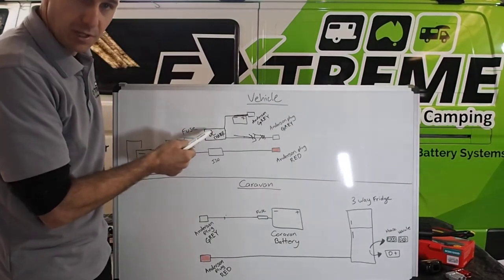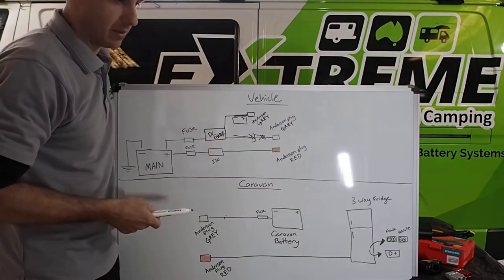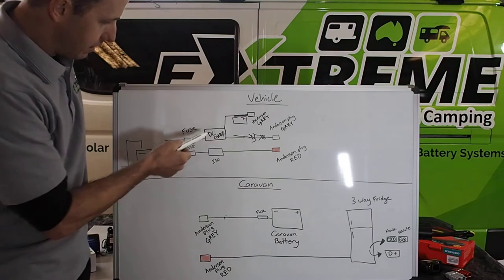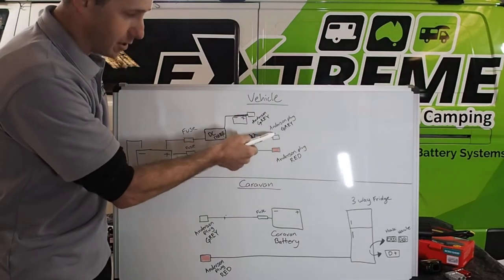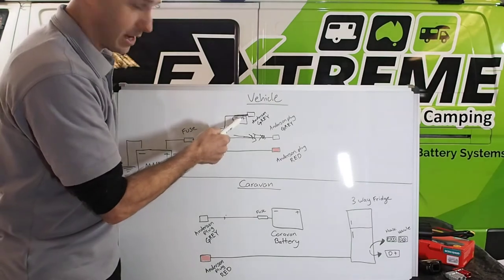DC charger in the back of a vehicle. Let's say a 200 series Land Cruiser. You've got a DC charger in the back. You've got another battery in the back under a wing. That's charging that battery in your Anderson plug. Your grey one, not your red.